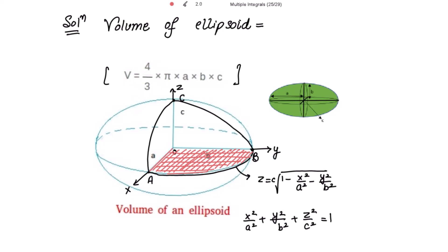The volume is bounded on the sides by the planes x equal to 0 and y equal to 0. The ellipsoid cuts the plane xOy in the ellipse x-squared over a-squared plus y-squared over b-squared equal to 1, where z equals 0.